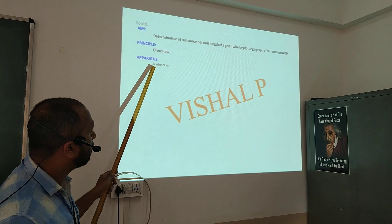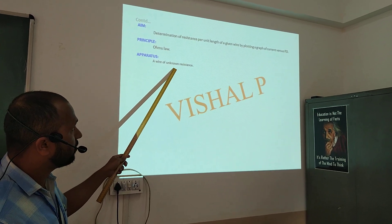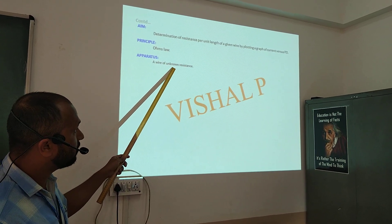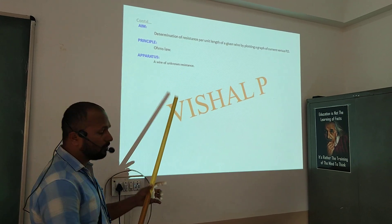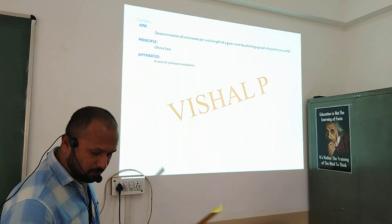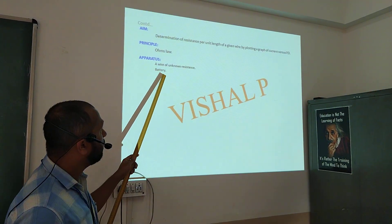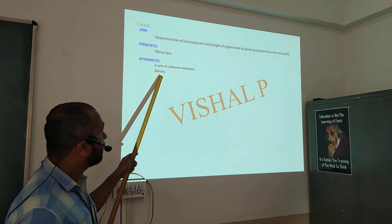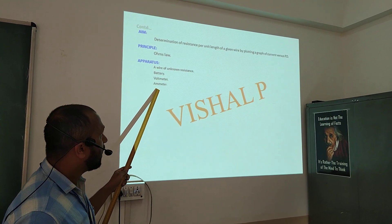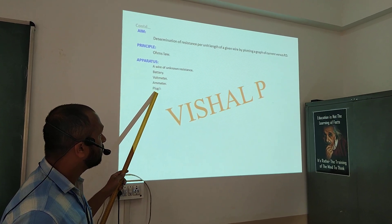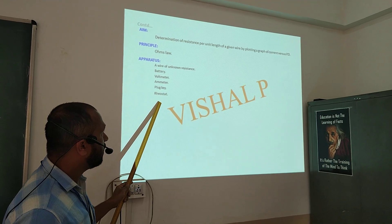Here we are going to use a wire of unknown resistance, whose resistance you are going to determine by performing the experiment. Second, battery. Next, voltmeter, ammeter, plug key, rheostat. These are the apparatus we are going to use to perform this experiment.